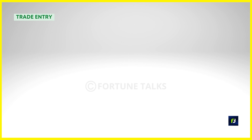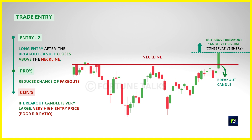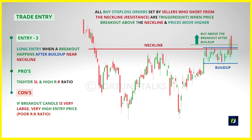For the entry criteria of the double bottom, an aggressive entry is when the price breaks above the neckline or resistance. You can enter a long position on the breakout, which can often cause the false breakout problem, or wait for the breakout candle to close above the neckline and then take a long entry above the close or the high price of the breakout candle. The advantage is that you enter early and might get the best possible entry price, but the drawback is that the breakout candle could be too large or the price could reverse giving a false breakout. The second entry technique is a breakout with buildup near the neckline — a tight consolidation near the resistance, indicating buying pressure and willingness to buy at higher prices.